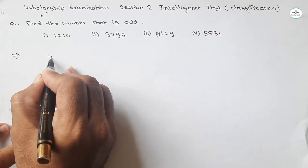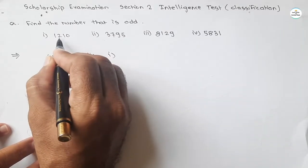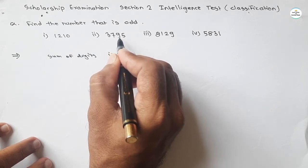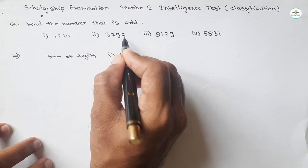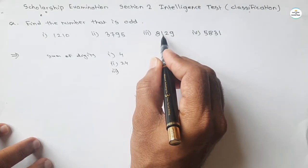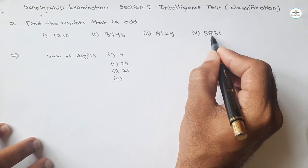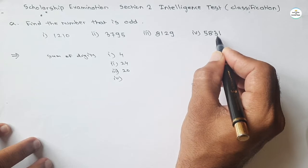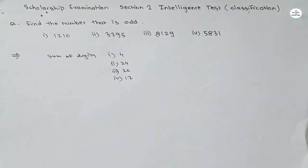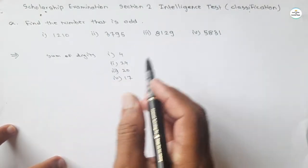For just trial, take the sum of digits. For first, it will be 4. For second, it will be 3 plus 7, 10, 10 plus 9, 19, 19 plus 5, 24. For third one, 8 plus 1, 9, 18, 18 plus 2, 20. And fourth one, 5 plus 8, 13, 13 plus 3, 16, and plus 1, 17. If you find the sum of these numbers, there is no relation with each other. So we must go further.